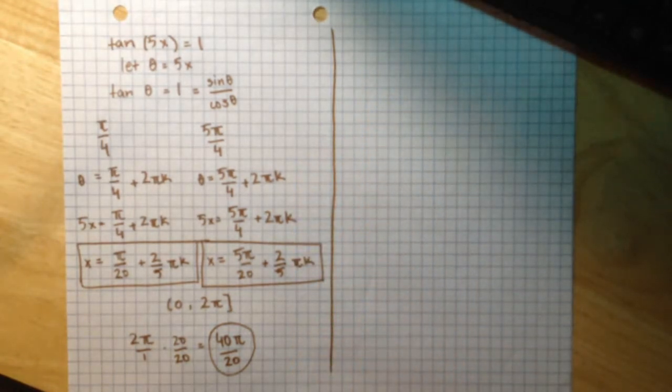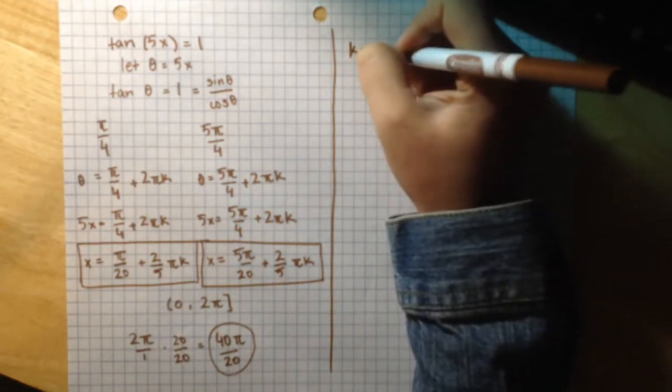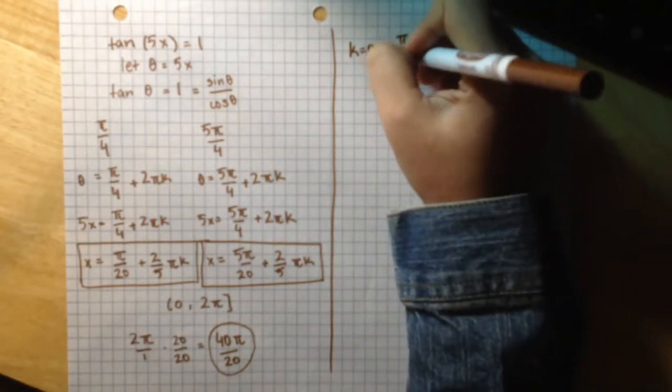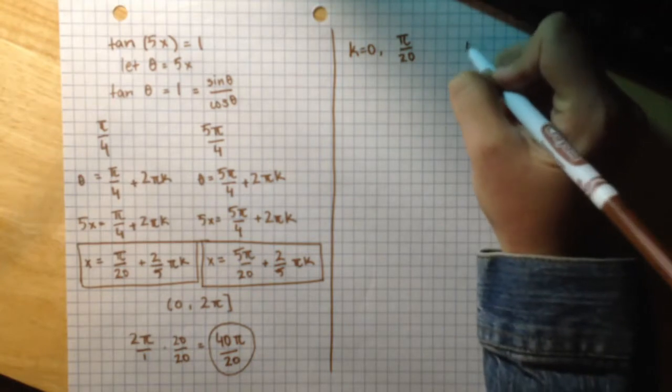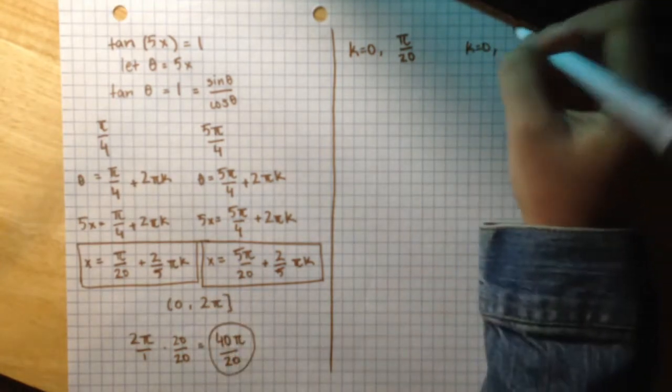I'm going to start substituting whole numbers into the k constant for both of these equations. If I substitute 0 as k into this first equation, I get pi over 20. And if I substitute k as 0 into this equation, I get 5pi over 20.